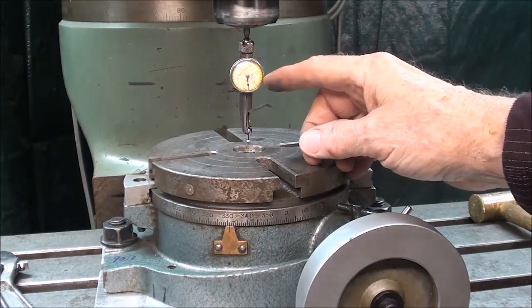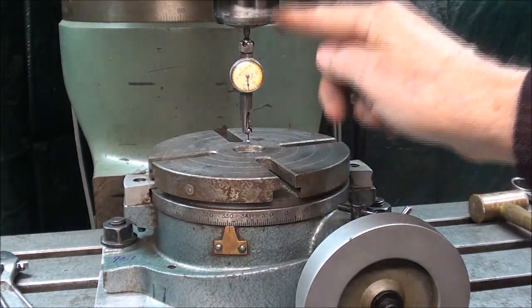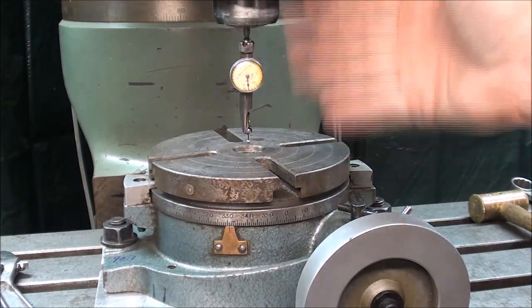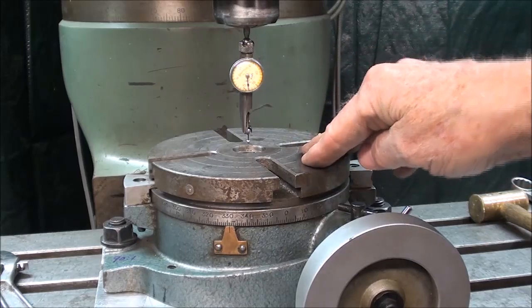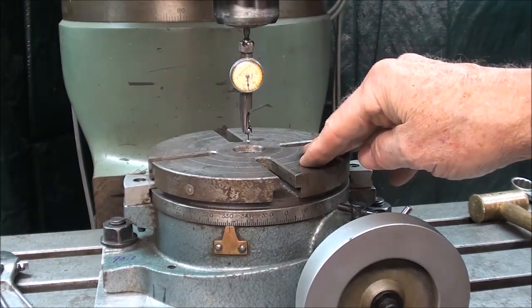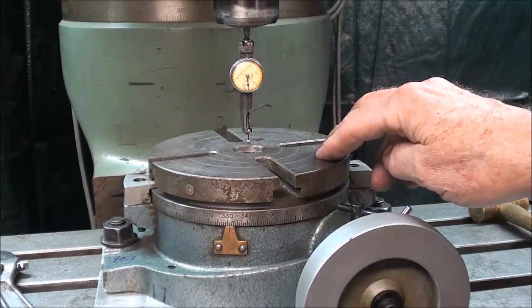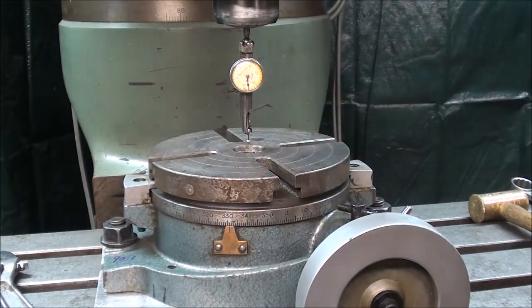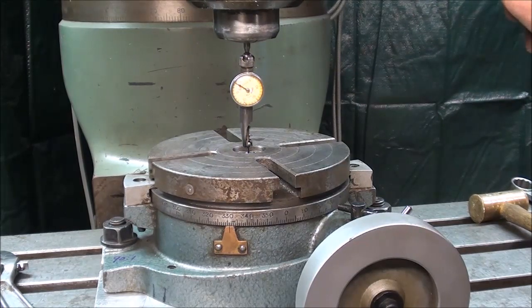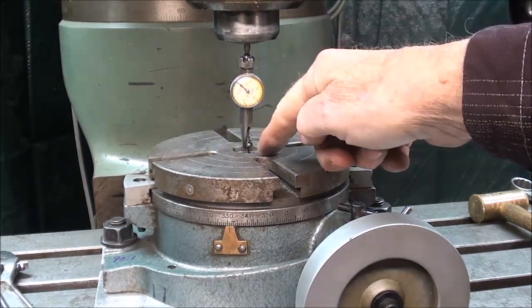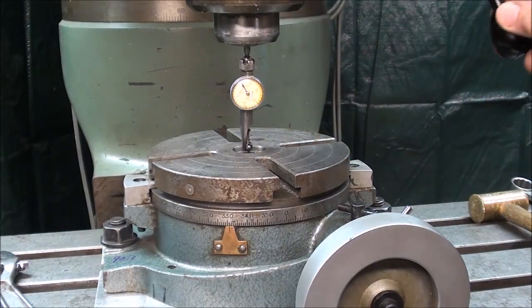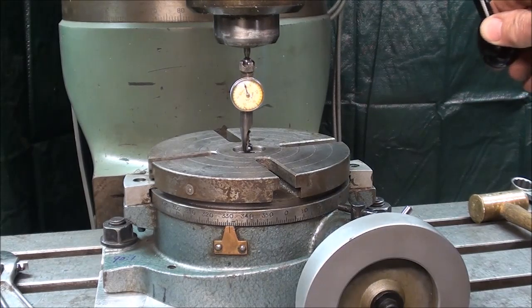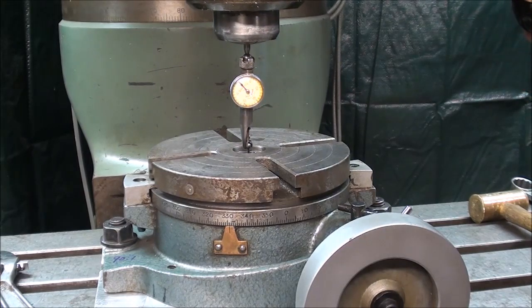I have mounted my Starrett last word indicator directly in a 3/16th collet, and there's a ball joint there, so this can be adjusted around. You can use any kind of indicator you own. In this case, I'm using the last word, one of my favorite indicators. As I lower the quill, I've already pre-adjusted this into the hole, and it's coming up to zero.